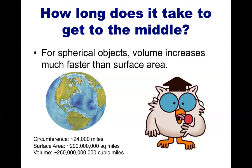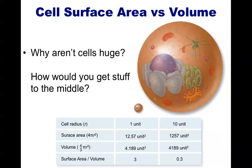For bigger spheres, like the Earth for example, the ratio between surface area and volume is much different. The volume is many times larger than the surface area. While it would take you a long time to cover the entire surface area of the Earth, it would take you many, many more times that to cover the entire volume. Even though cells are very tiny, the same principle is true — the bigger the cell, the greater the disparity there is between surface area and volume.